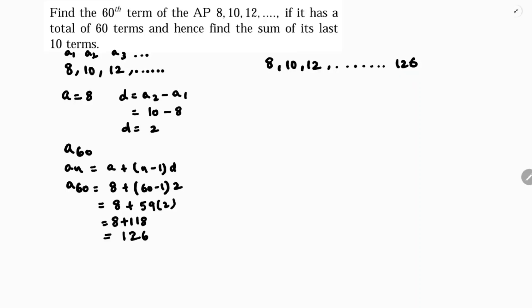Now they want sum of 10 terms from the end, from the last. So S10 formula is N by 2 into 2A plus N minus 1 times D. From the end, from the last, A is 126. And D will be with opposite sign, minus 2, because we are taking the series in opposite order.